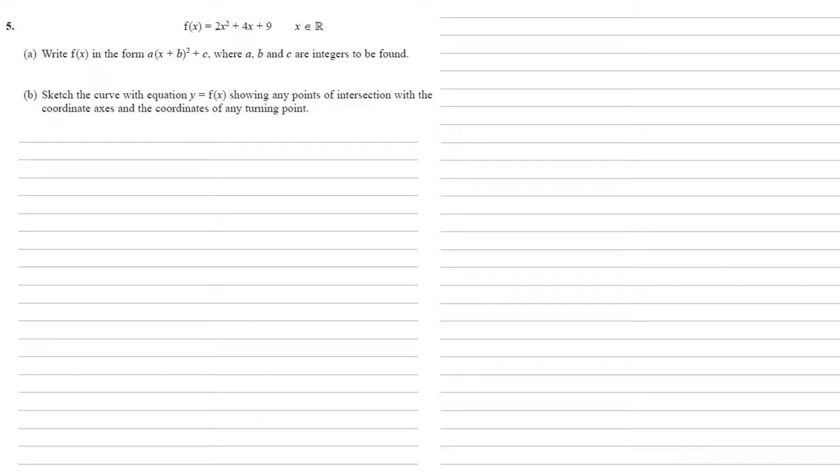f(x) = 2x² + 4x + 9. We need to write f(x) in the form a(x + b)² + c where a, b and c are integers to be found.